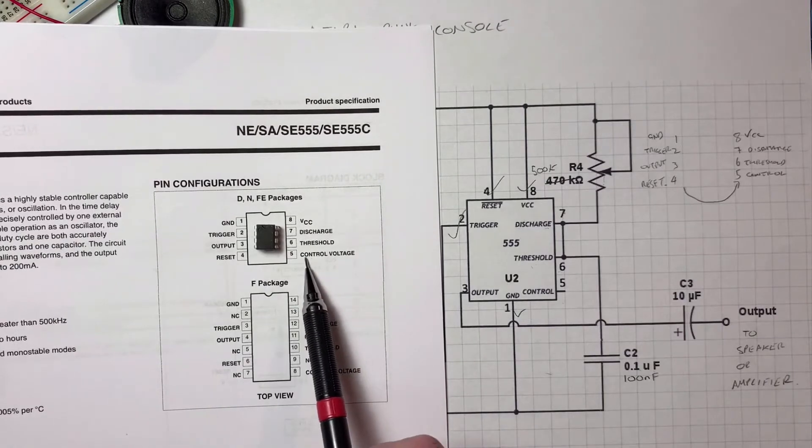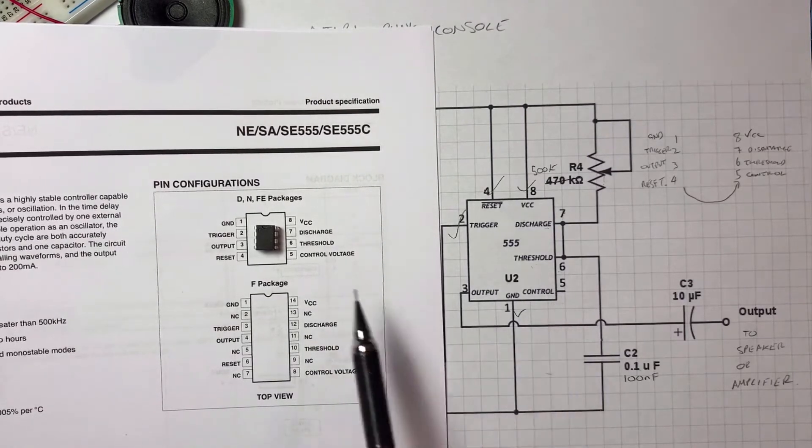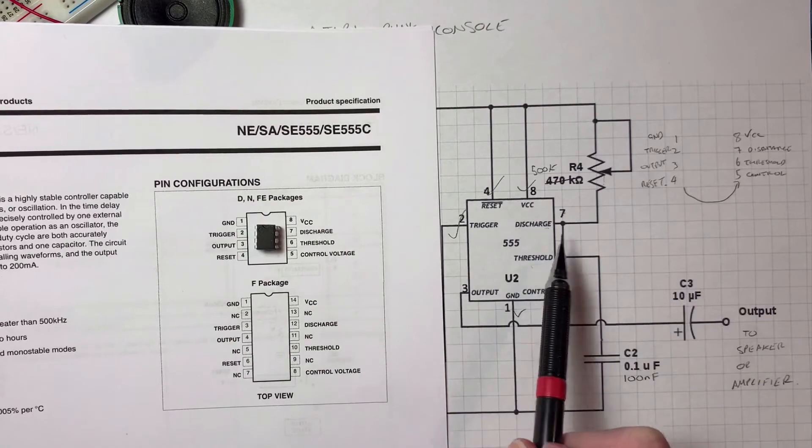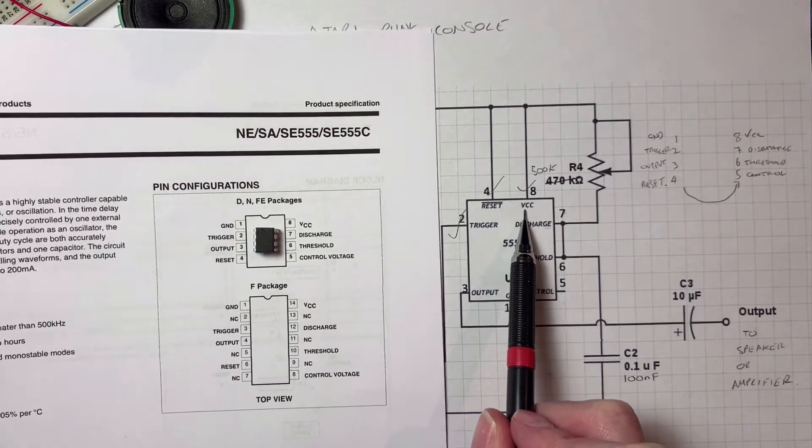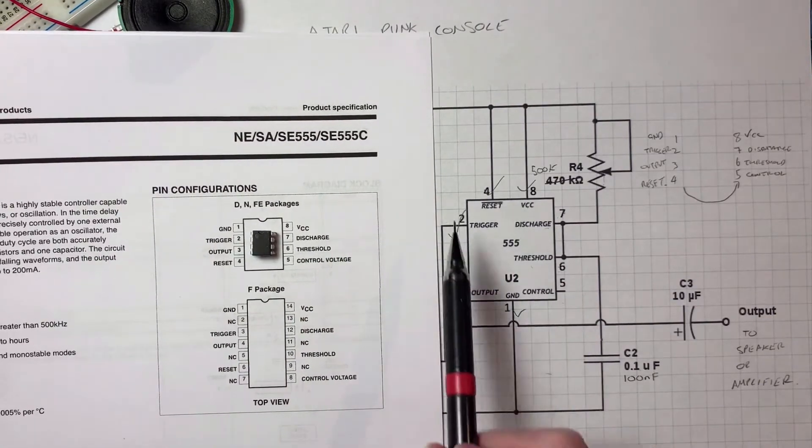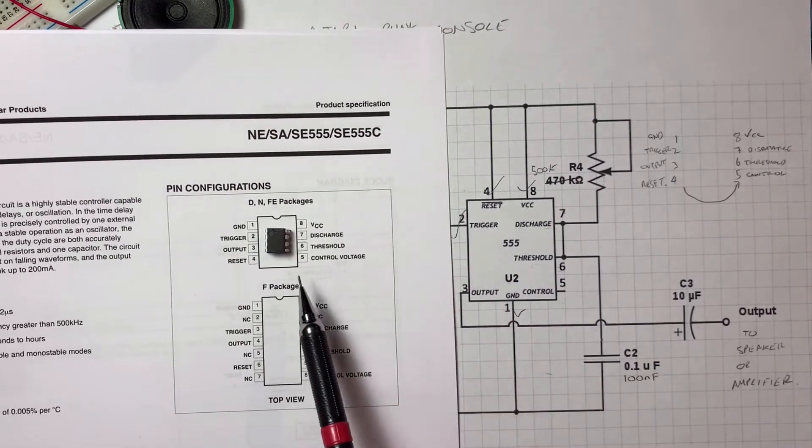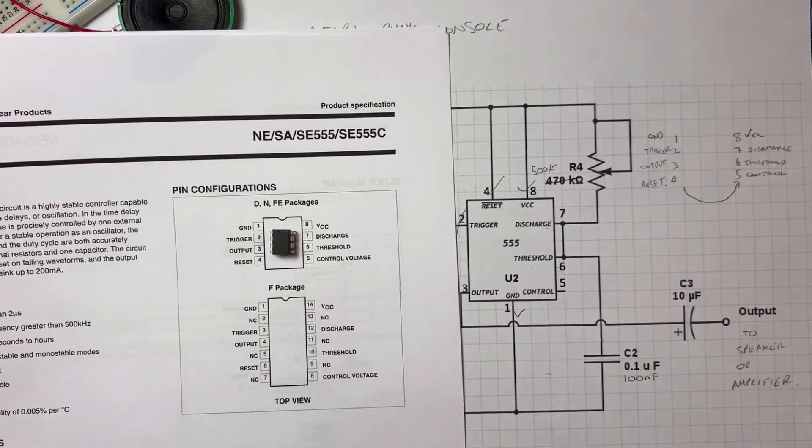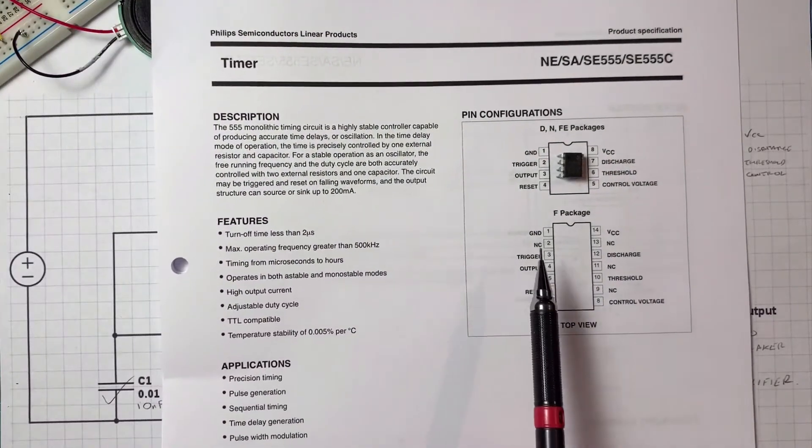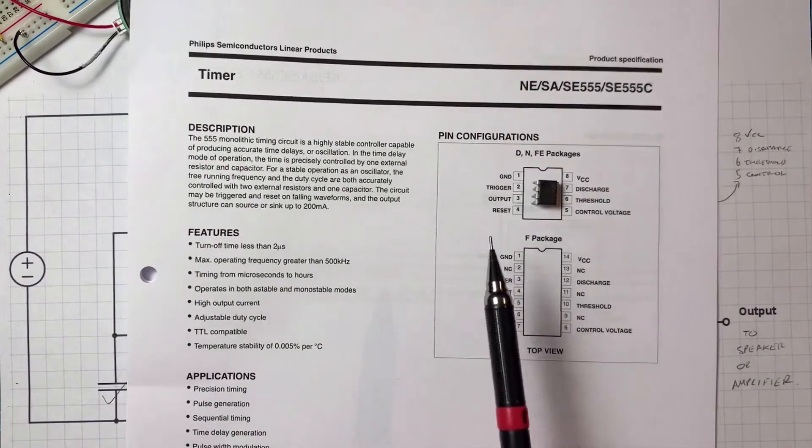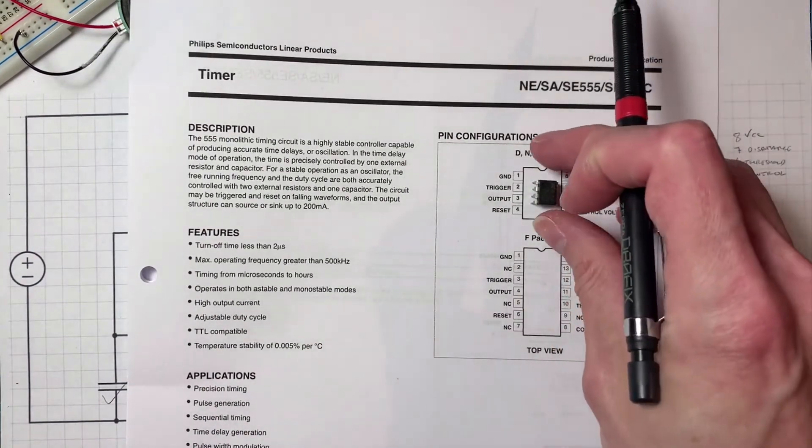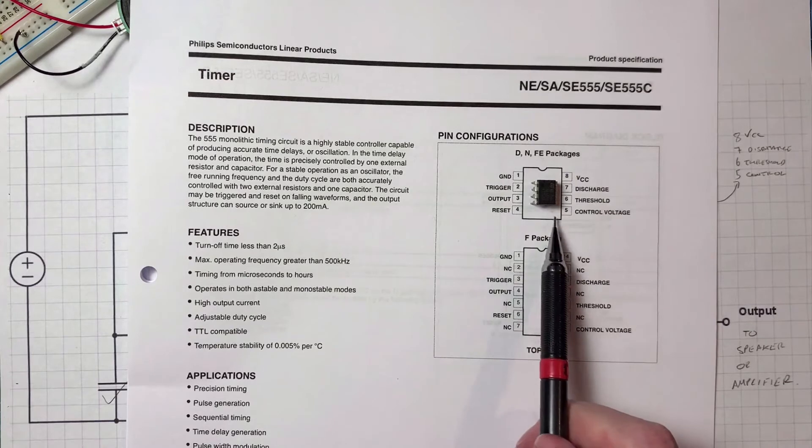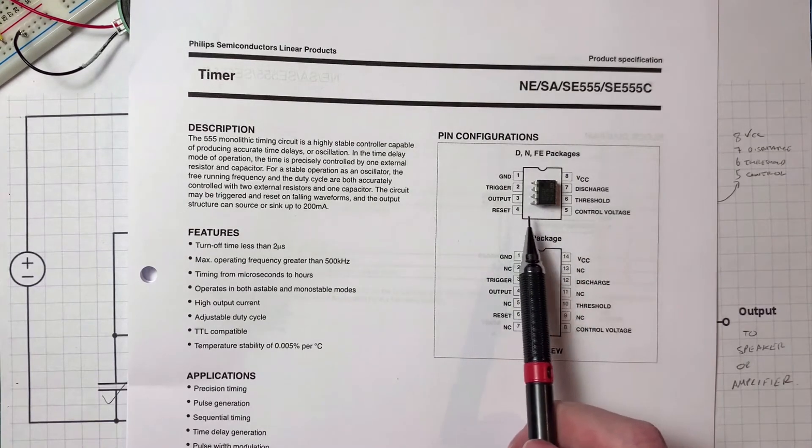So for example, control pin 5, threshold pin 6, discharge pin 7, VCC pin 8, but ground's down here, not up here. So know your IC, and the best way to do that is to download the datasheet. You can put it on your phone or computer so you don't have to print it out. And here it is, and I can actually put it there and see which pin is which.